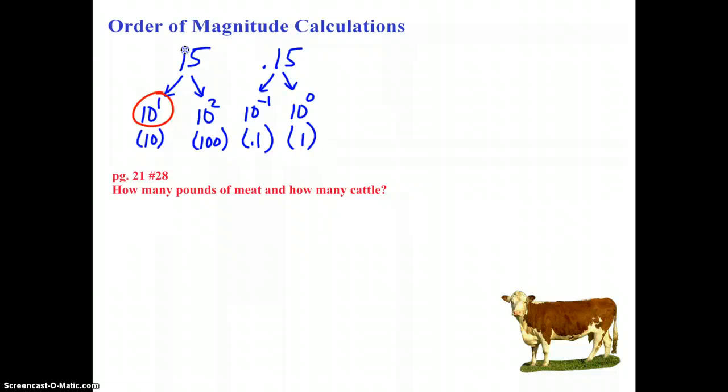Once you've established that you've selected the correct pair of powers of 10 the number lies between, the rest is pretty easy. Which is it closer to? Is 0.15 closer to 10 to the negative 1, or 10 to the 0? And clearly it's closer to 10 to the negative 1 than it is 10 to the 0. So 0.15's order of magnitude is 10 to the negative 1, or you could just say negative 1.